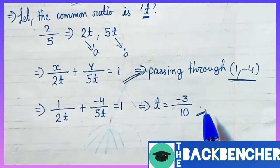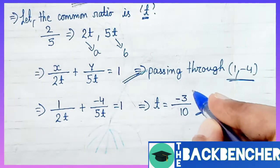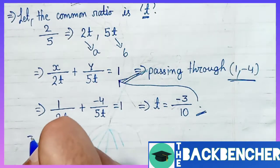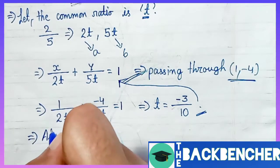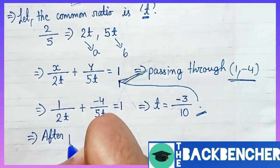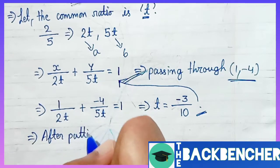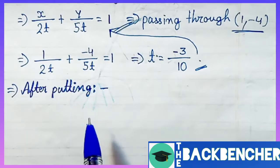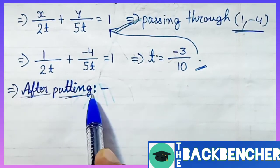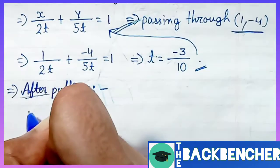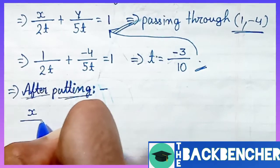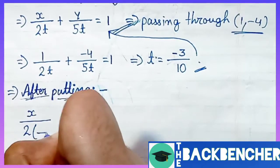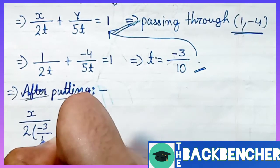1/(2t) - 4/(5t) = 1. By solving this equation we get t = -3/10. Now we will put this value in this equation. Look at the arrow. t = -3/10. We will substitute this in the equation because we will equate the value in this equation, that is -3/10.